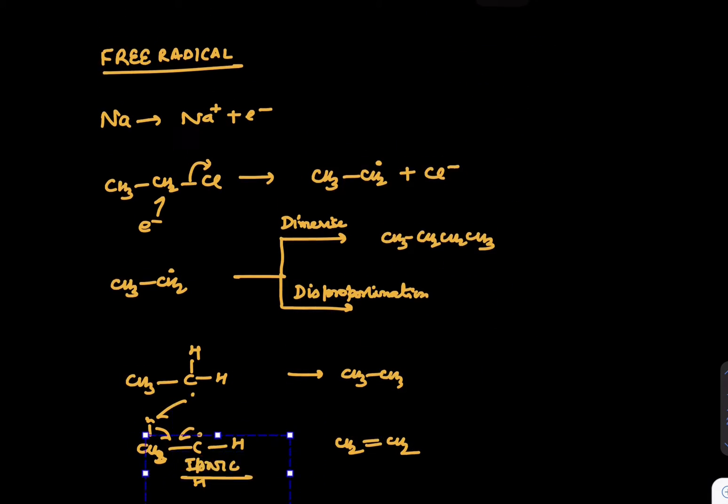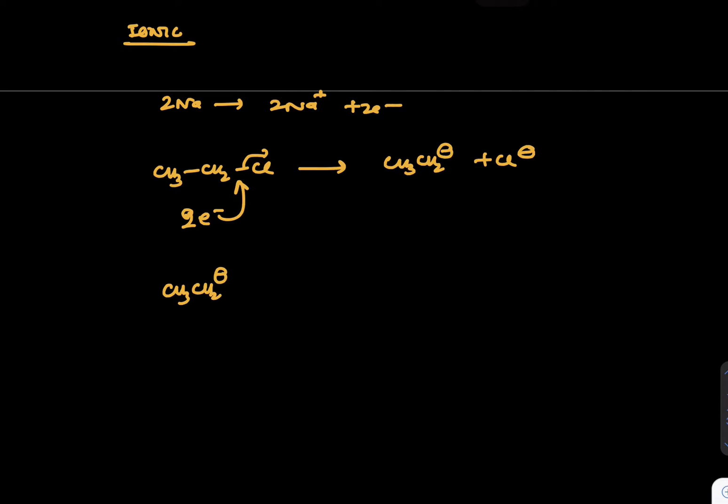Now let us see what is ionic route of this mechanism. In ionic route, you take Na, so write 2Na gives 2Na+ + 2e-, that is step number one. In step number two, CH3CH2Cl which was given will bring those two electrons, both the electrons, and once we attack here, we put the full arrow this time, it will become CH3CH2- and Cl- is out. Last time remember we removed radical. This time we are removing this group. And in the next step, this CH3CH2- can go to other unit of CH3CH2Cl and once it will go, Cl is out and they can plug. So this is the second mechanism which is called the ionic mechanism.